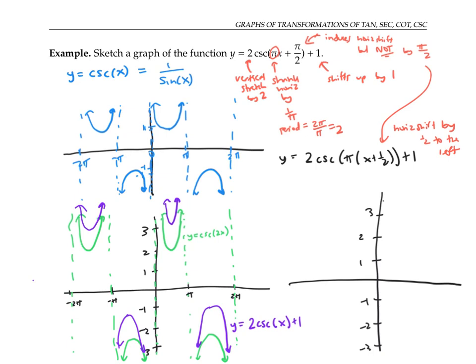They would be at zero, one, two, and so on, except everything shifted over by one half.